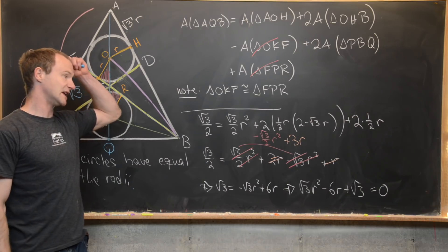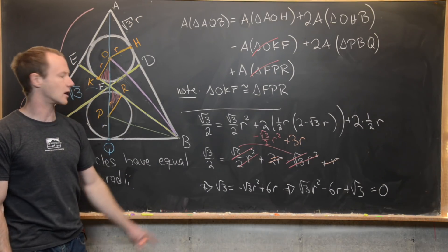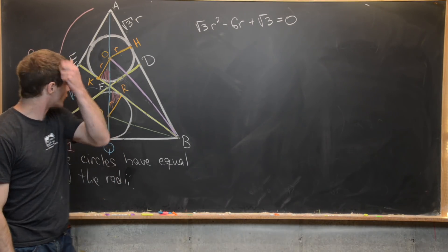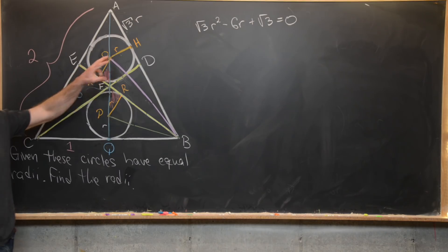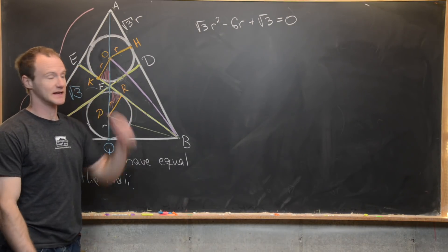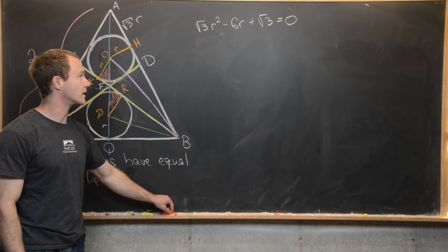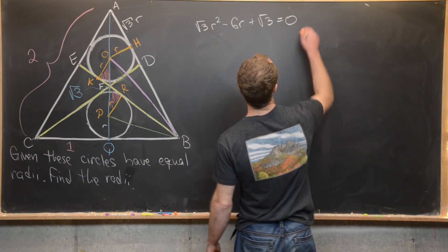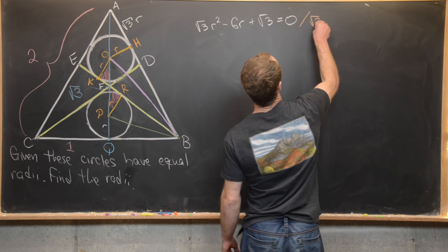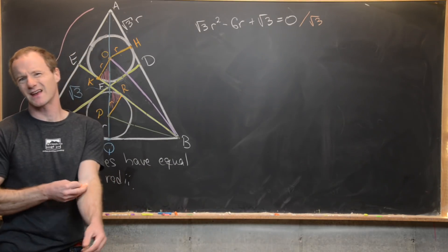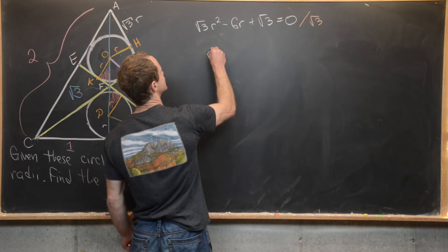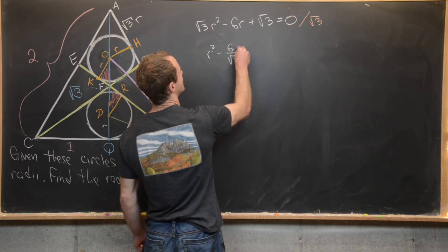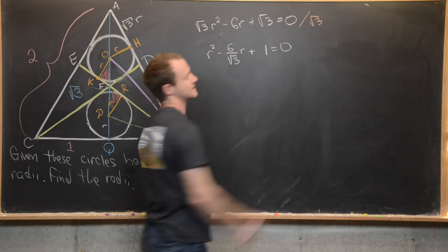We can simplify that to give us root 3 r squared minus 6r plus root 3 equals 0. So we've got this nice quadratic equation to solve for r. Let's bring that up and solve it. We've surmised that the radius satisfies: root 3 times r squared minus 6r plus root 3 equals 0. Dividing both sides by root 3 gives r squared minus (6 over root 3) r plus 1 equals 0.